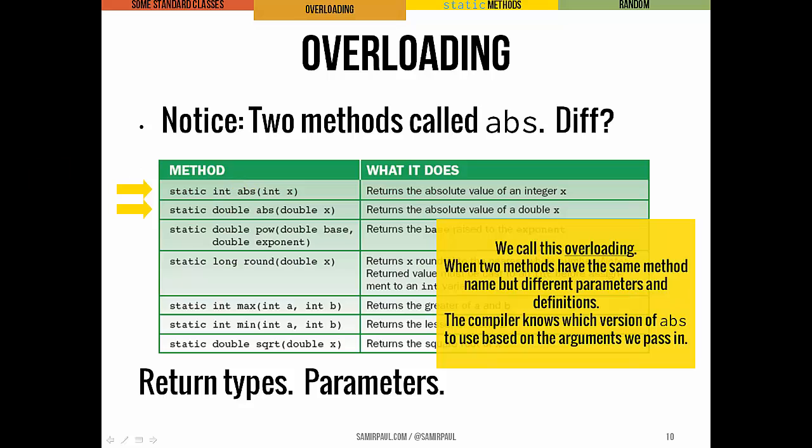We call this overloading. We would say the absolute value method, the abs method, is overloaded. They have the same name, but different parameters. That's how the compiler can tell if we call the abs method, which of the two to use. It can tell based on what we pass in.